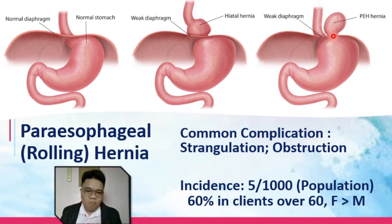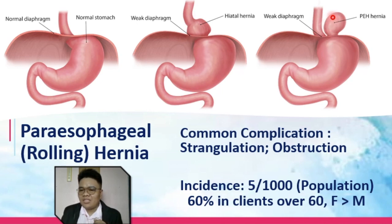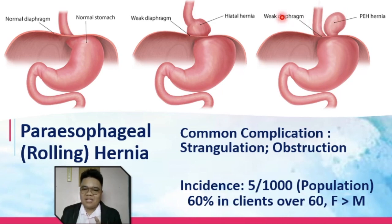Comparing sliding hernia and rolling hernia: in sliding hernia, part of the stomach moved up and pushed the esophagus up. But in rolling hernia, a part of the stomach protruded through the diaphragm, and that protrusion lies alongside the esophagus. The junction between the stomach and the esophagus still remains below the diaphragm.